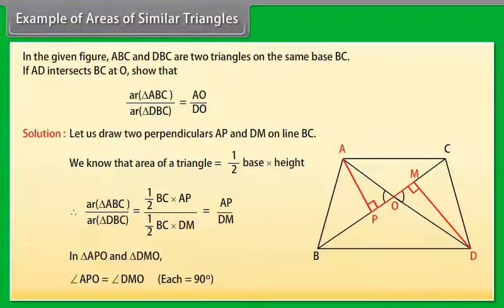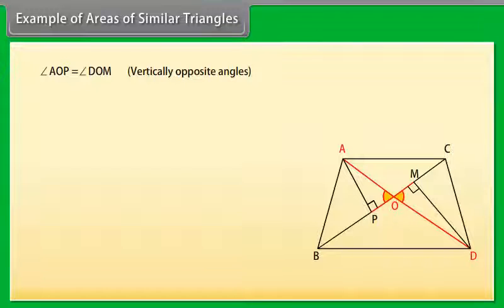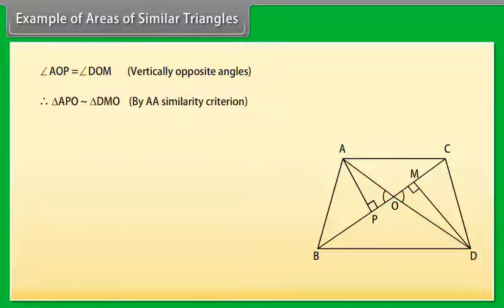angle APO equals angle DMO, each 90 degrees. Angle AOP equals angle DOM, vertically opposite angles. Therefore, triangle APO is similar to triangle DMO by AA similarity criterion.